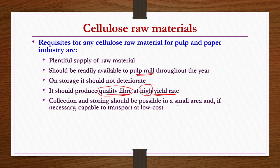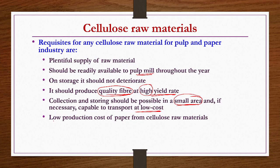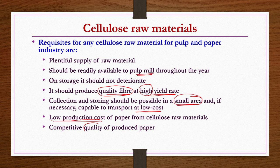Collection and storing should be possible in a small area. Sometimes it is necessary to transport such materials, and that should be done at low cost. From the product point of view, the raw material should have characteristics such that paper is produced at low cost and the quality is competitive. If the paper quality is not competitive, you cannot sustain in the competitive industrial world for long.